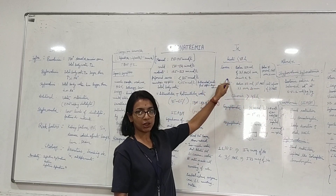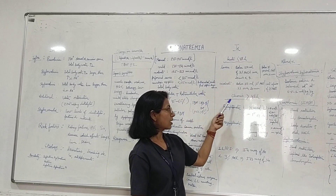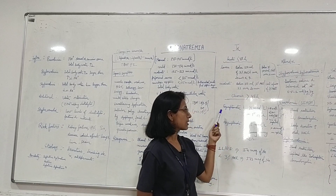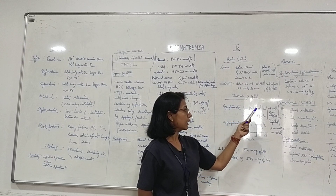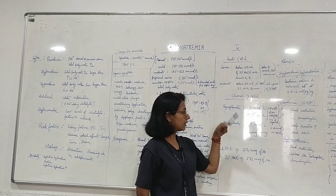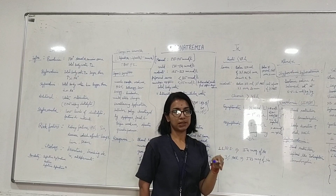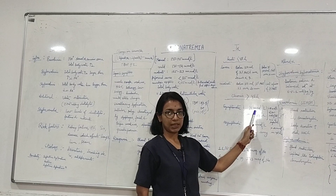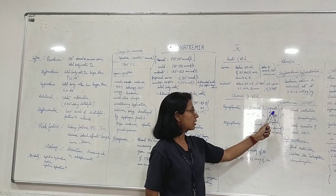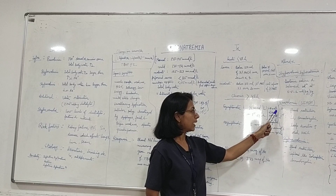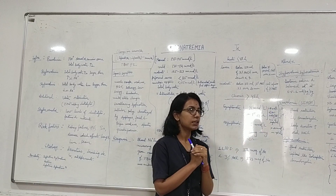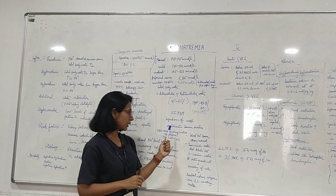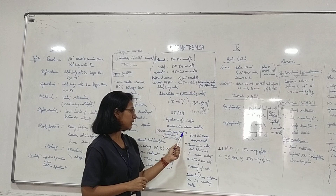If the onset is chronic — more than 48 hours — and the patient is symptomatic, according to the European guideline give 10 millimole per litre in the first 24 hours, then 8 millimole per litre. According to the American guideline, target 4 to 8 millimole per litre. Before proceeding, it is important to understand ODS — osmotic demyelination syndrome.